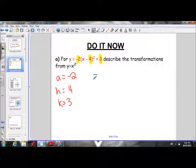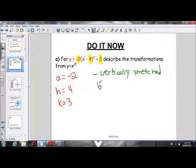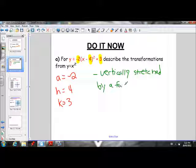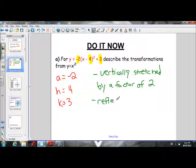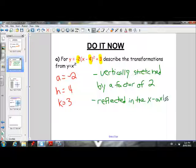We know that our a is negative 2. And we know that if a is less than negative 1, negative 2 is less than negative 1, it's going to be vertically stretched. So this parabola is going to be vertically stretched by a factor of 2. That a value is negative, so that means that it's going to be reflected in the x-axis. Reflected in the x-axis. And what that means is that the parabola is going to be flipped upside down. That x-axis is going to act as a mirror.